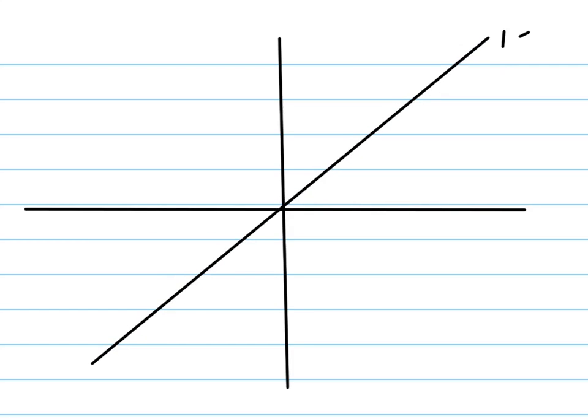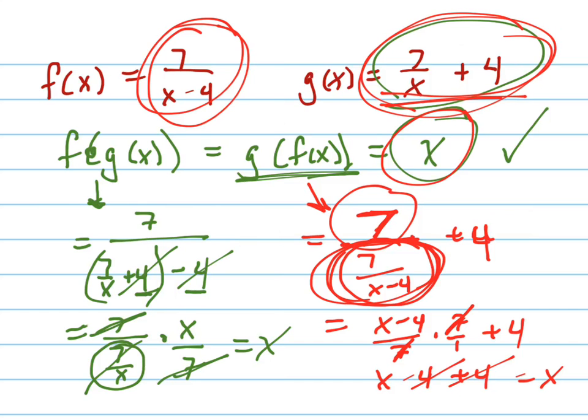Now, for this one, this is actually not going to be easy to see, but there's the line y equals x right there. Whoops. This is the line y equals x. If you were to graph these two functions, which you don't know how to do that yet, by the way, these are rational functions.